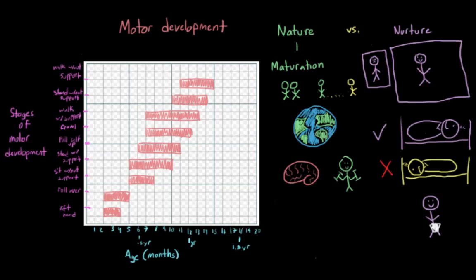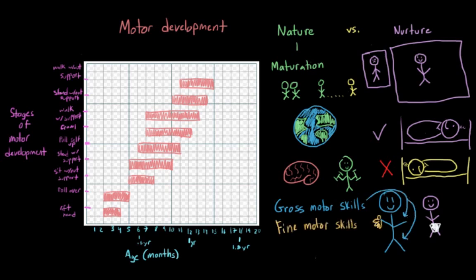There are also a couple of patterns that you should keep in mind when you think about motor development. The first one is that we can break motor skills down into two main types, gross motor skills and fine motor skills. Gross motor skills are skills that involve larger muscles, our arms and our legs, while fine motor skills refer to movements that involve smaller muscles, like our fingers.